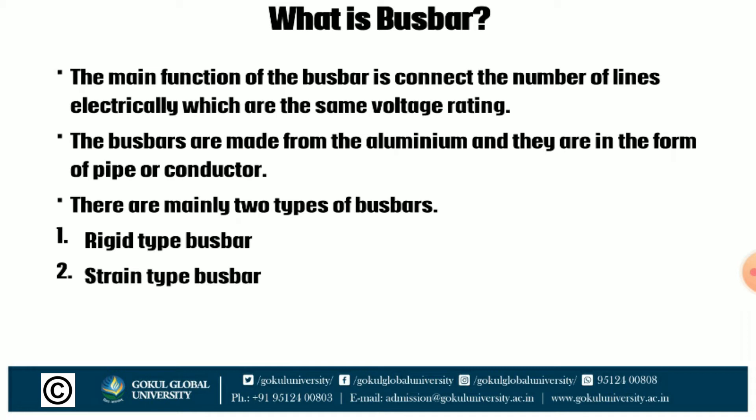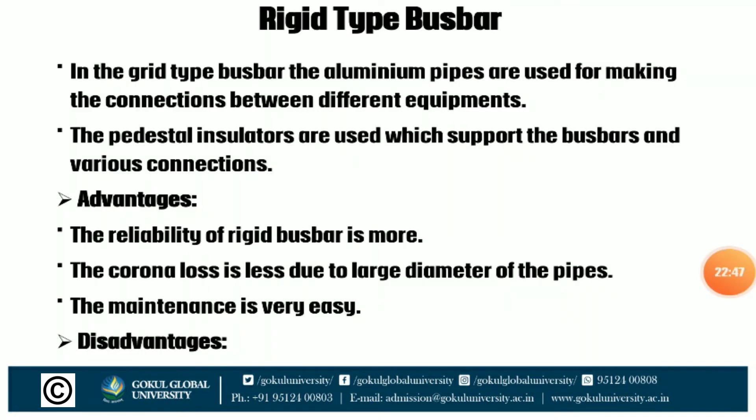Now we discuss about the bus bar. The main function of the bus bar is to connect a number of lines electrically which are at the same voltage rating. Bus bars are made from aluminium in the form of pipe or conductor. There are mainly two types: first, rigid type bus bar; second, strain type bus bar. In rigid type bus bar, aluminium pipes are used for making connections between different equipment, supported by pedestal insulators. Advantages: more reliability, less corona loss due to large diameter of pipes, and easy maintenance. Disadvantages: requires large space and is very costly.